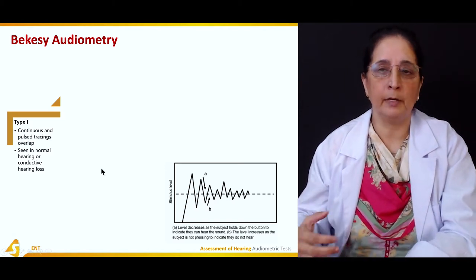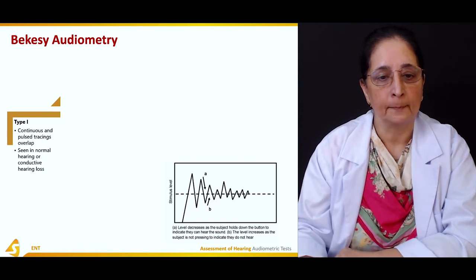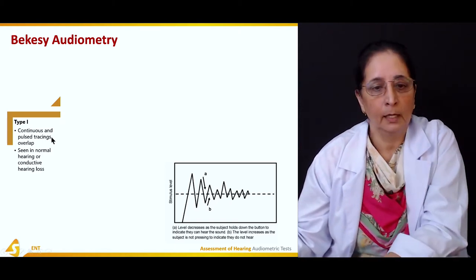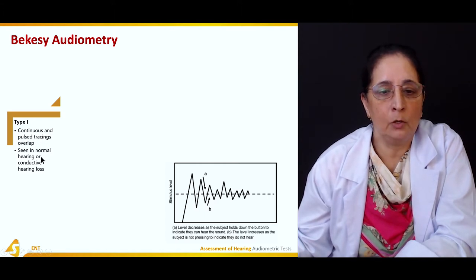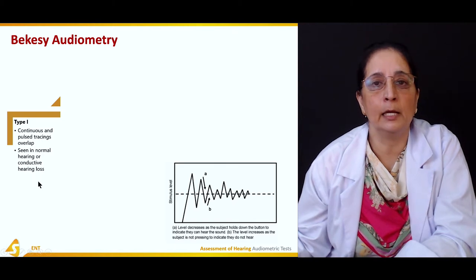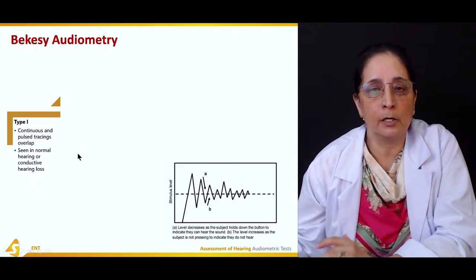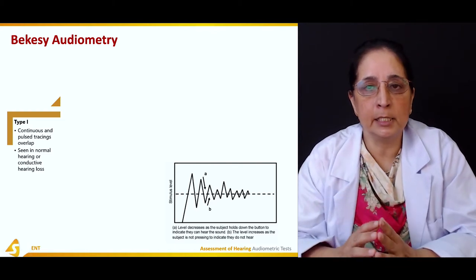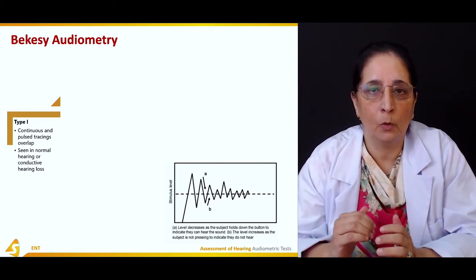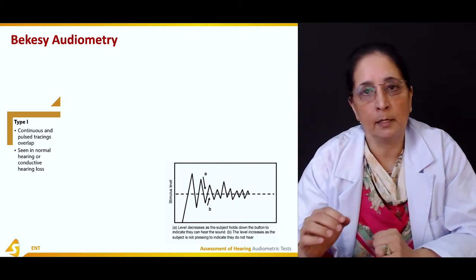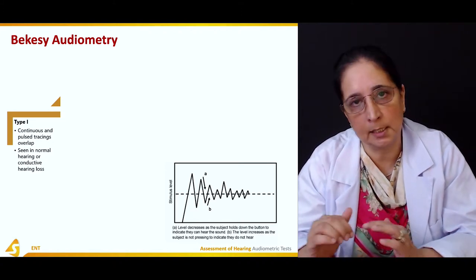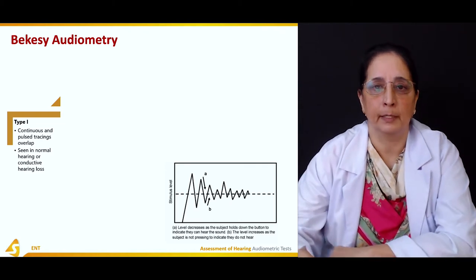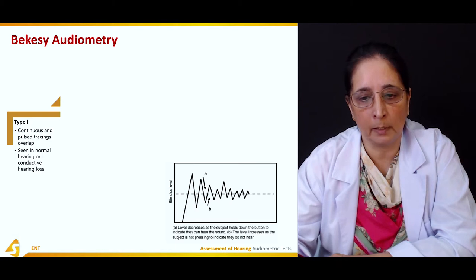In VEXI audiometry, there are roughly four or five types. In Type 1, the continuous and pulsed tracings overlap. This is seen in normal hearing or conductive hearing loss. Pulsed tracing is interrupted, while continuous tracing is unbroken, and they overlap in this type.